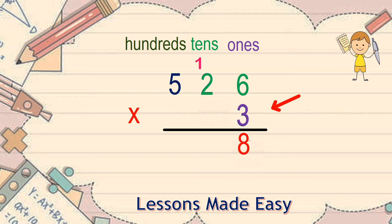In the tens place, we have 2 times 3 equals 6. And we add the extra 1 ten we saved earlier, making it 7 in total.